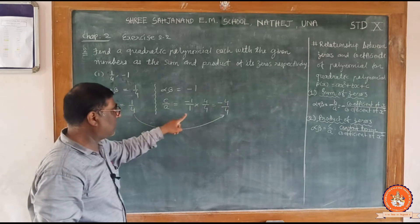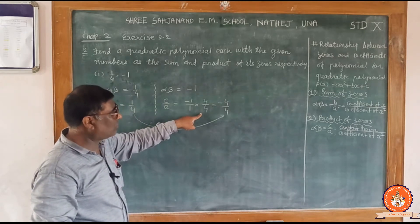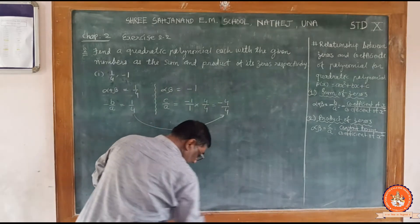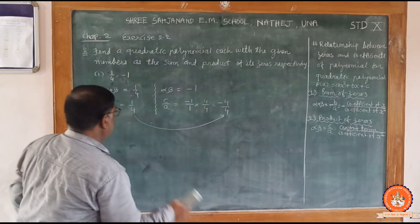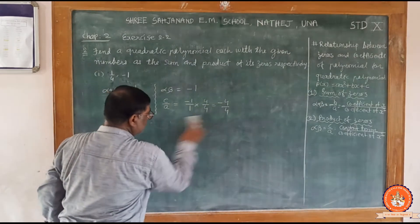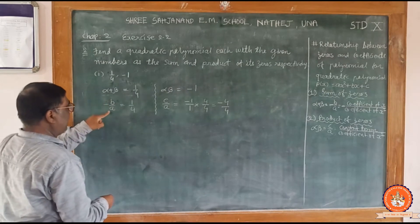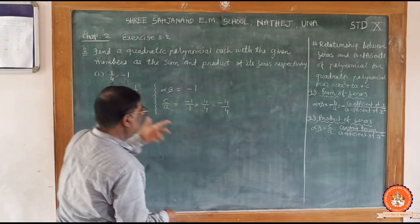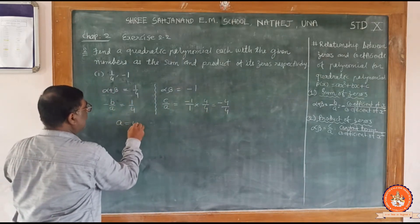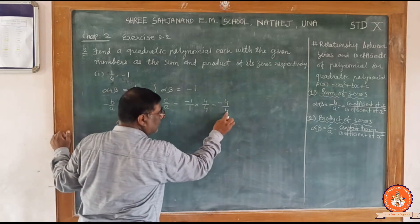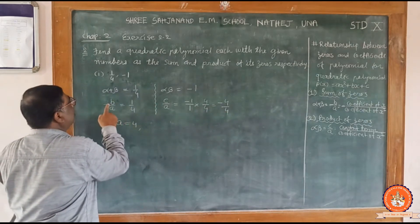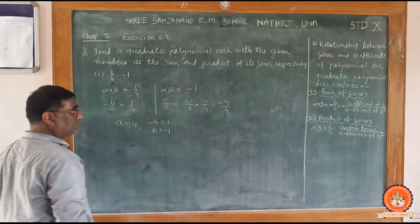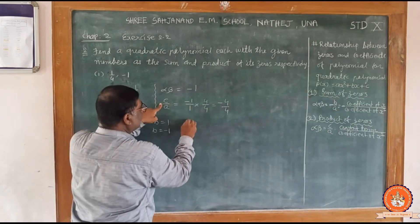Now minus b upon a equals 1 upon 4 and c upon a equals minus 4 upon 4. So it is obvious that a equals 4. Since minus b equals 1, b equals minus 1, and c equals minus 4.